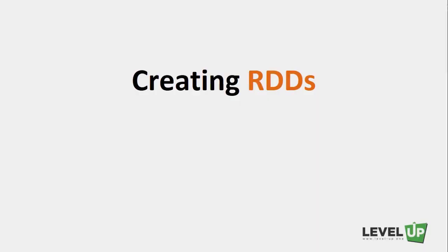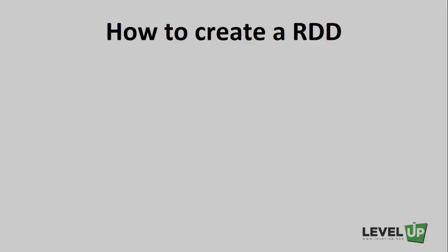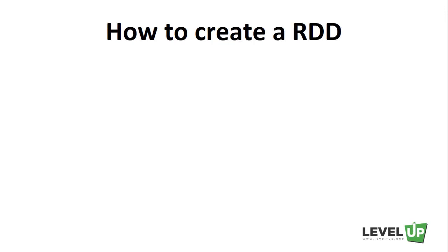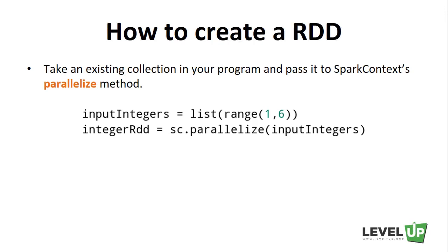In this lecture, we'll talk about how to create RDDs. Spark provides two ways to create RDDs: loading an external dataset and parallelizing a collection in your driver program. The simplest way is to take an existing collection and pass it to SparkContext's parallelize method. The SparkContext object represents a connection to a computing cluster — we'll discuss it in more detail later.